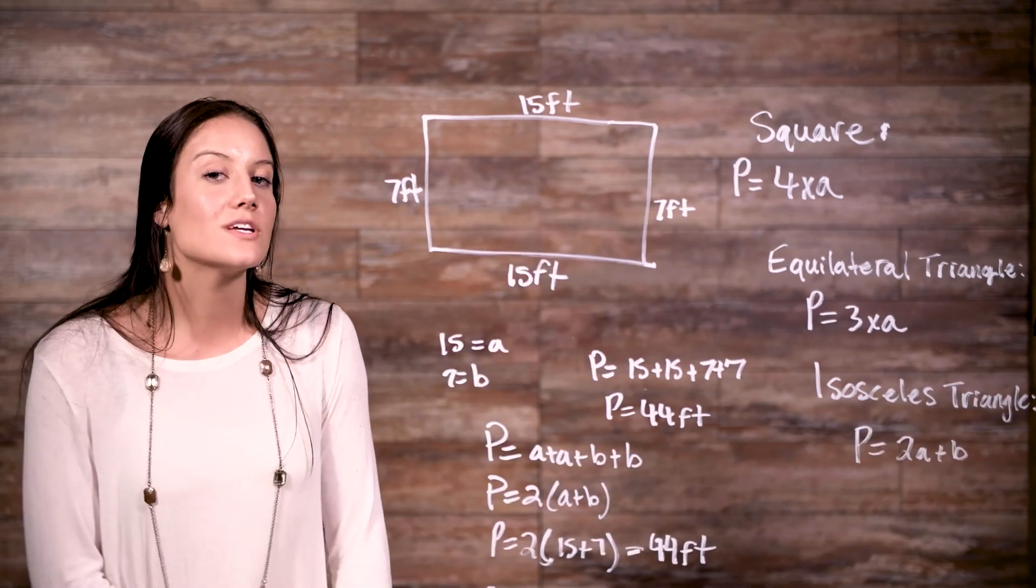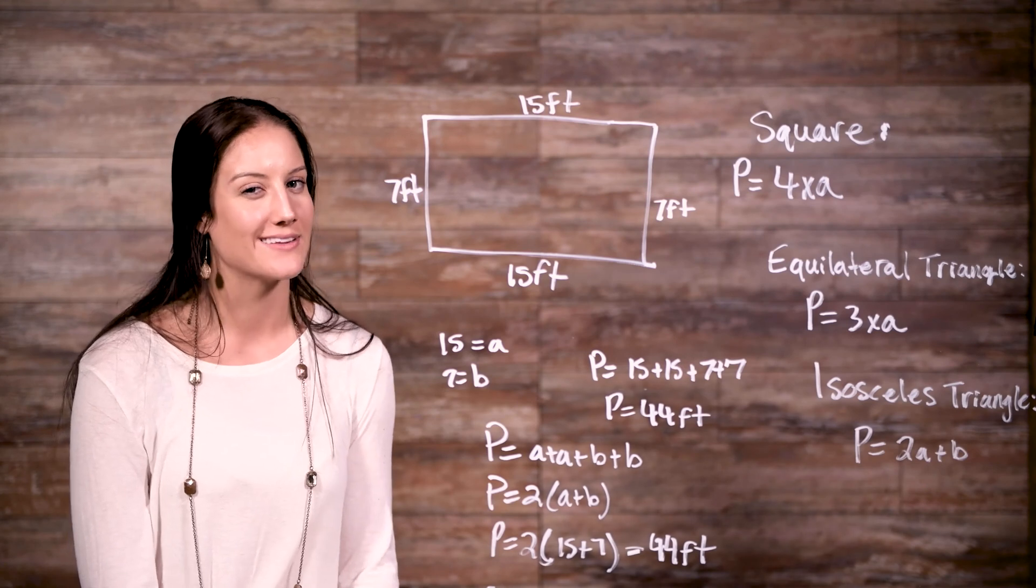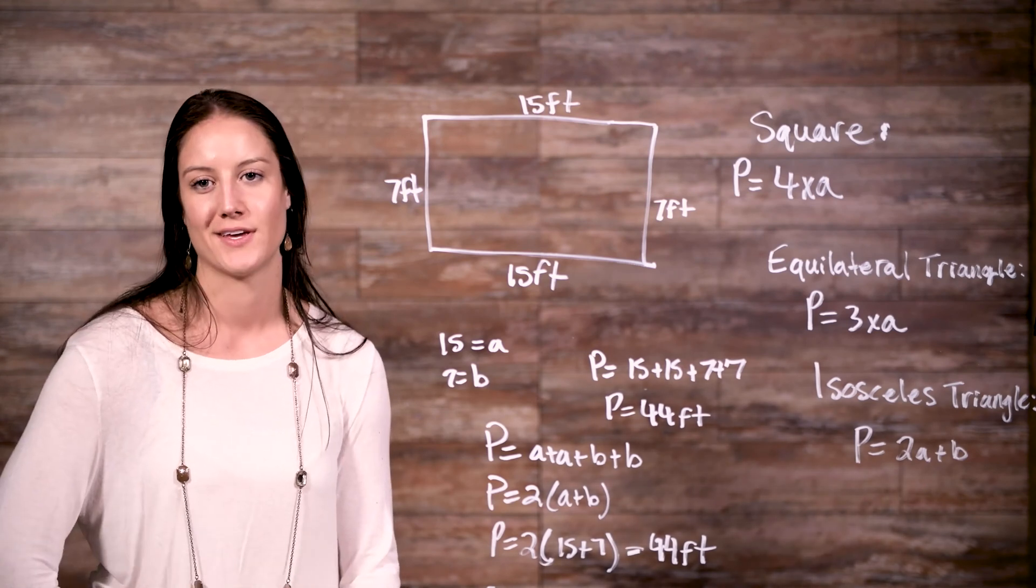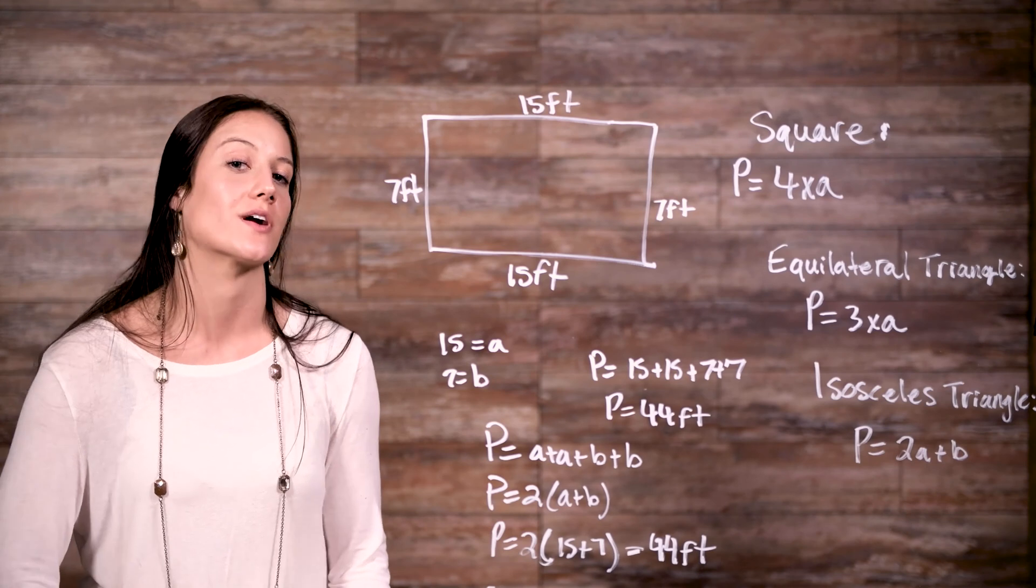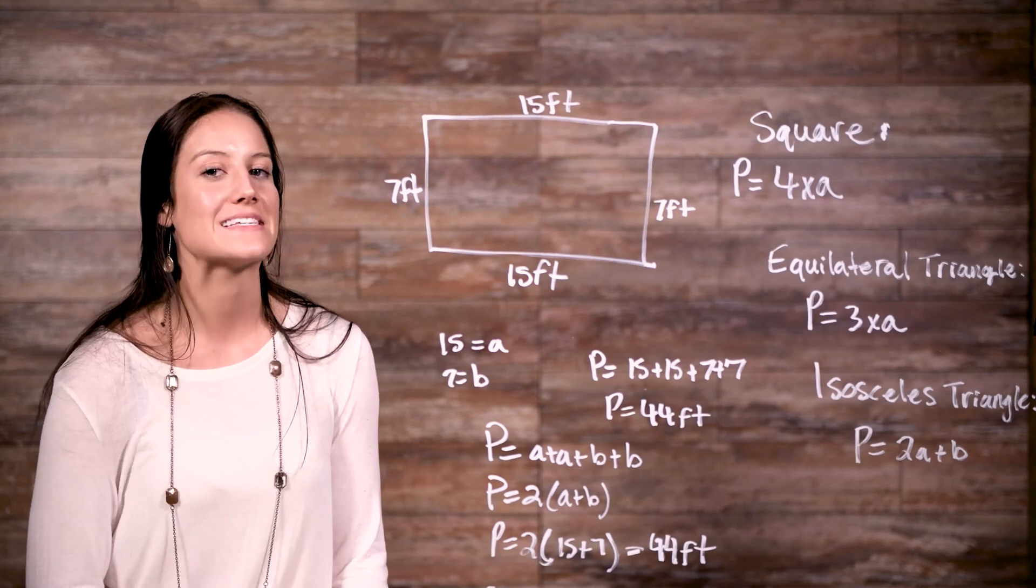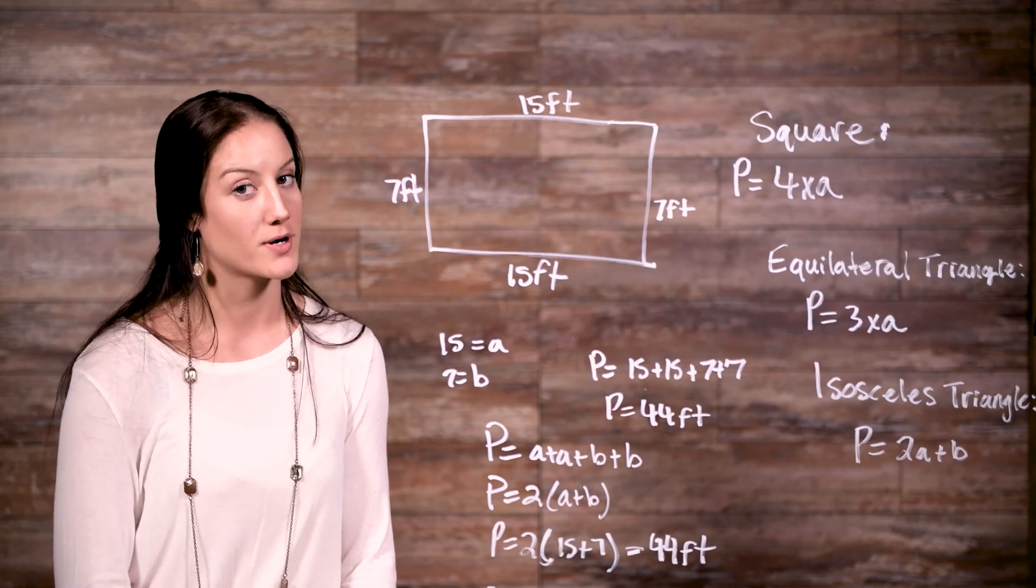Now, the only shape whose perimeter may seem a little less obvious to find is our friend, the circle. You guys may have heard of the term circumference. Well, the circumference is the exact same thing as the perimeter of a circle.